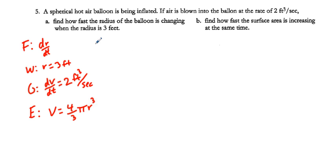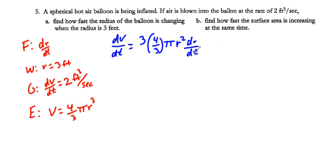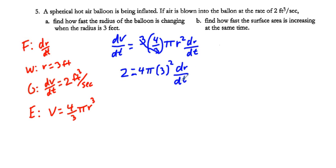Differentiating both sides: dV/dt = 3 × (4/3)π r² · dr/dt. The threes cancel, giving dV/dt = 4πr² · dr/dt. Plugging in: 2 = 4π · (3)² · dr/dt, so 2 = 36π · dr/dt.